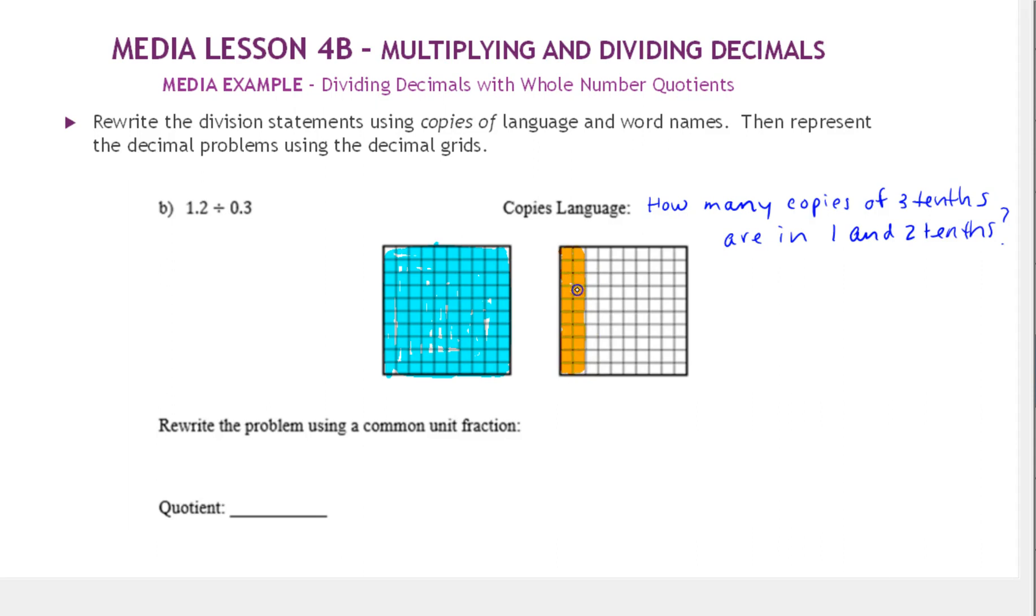So this is our dividend. The number we're dividing is the first number and 3 tenths is our divisor. So we're going to see how many copies of 3 tenths are in 1 and 3 tenths. These three columns would be 1 copy of 3 tenths. Here's the second copy. Here's a third copy. Now we have 1 tenths left here and 2 tenths left here. So I'll put these together and we have 4 copies.